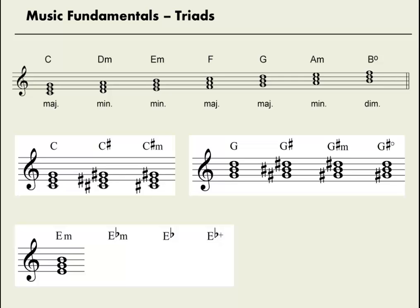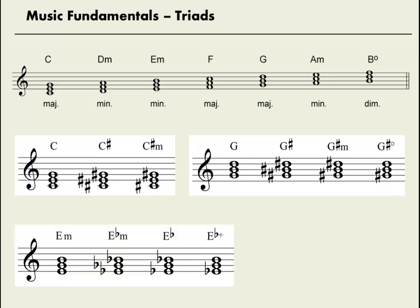How about three based on E? E G B is minor. So E flat, G flat, B flat has to be minor. To go from minor to major, we'll raise the third — E flat, G, B flat. And to go from major to augmented, we'll raise the fifth — so E flat, G, B.